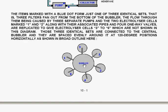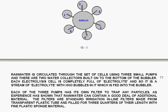And they are spaced evenly around it so you have cell 1, cell 2, cell 3, cell 4, cell 5 and cell 6 all feeding into the central bubbler.